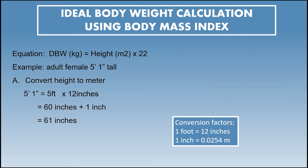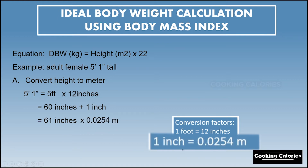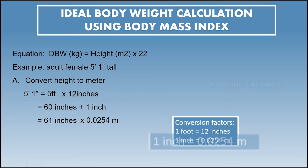Now to convert the height to meters, we will multiply 61 inches by 0.0254 meters, because 1 inch is equivalent to 0.0254 meters. That is equivalent to 1.549 meters.